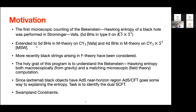By counting all the different ways you can wrap branes on the cycles of K3, you can work out the spectrum of the field theory, and from here you can get a matching with the gravity computation of the entropy, which is roughly the area of the horizon. This was extended to 5D black holes in M-theory on Calabi-Yau threefolds by Vafa, and then to 4D black holes in M-theory on Calabi-Yau threefolds times S1 by Maldacena, Strominger, and Witten, which I'll refer to as MSW. More recently, people have looked at black strings arising in F-theory, which will be the topic of this talk. We focus on extremal black objects, where the temperature is zero, so in the near horizon limit you get an AdS factor.